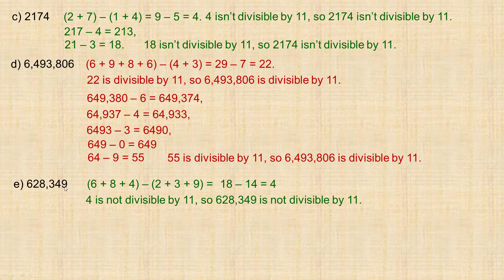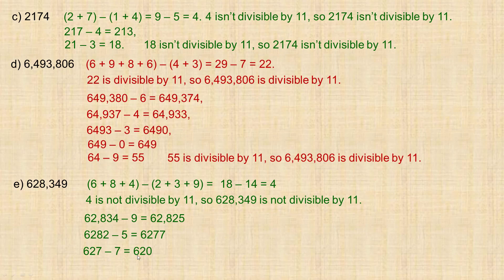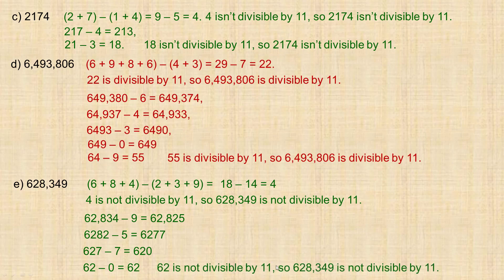Using the second method on 628,349: take the 9 off and subtract from 62,834 to get 62,825. Take the 5 off and subtract from 6,282 — giving 6,277, ending in 77. Take the 7 off and subtract from 627 to get 620. Drop the zero, then 62 minus 0 is still 62. Since 62 is not divisible by 11, 628,349 is not divisible by 11.